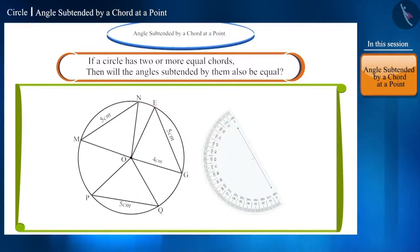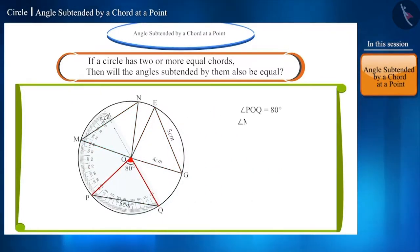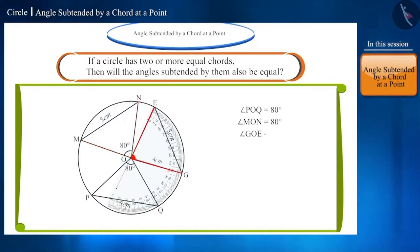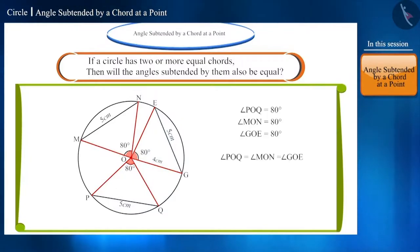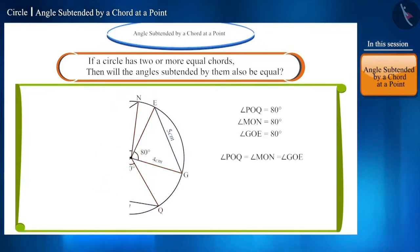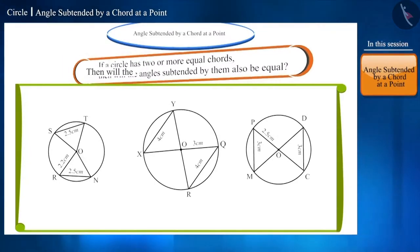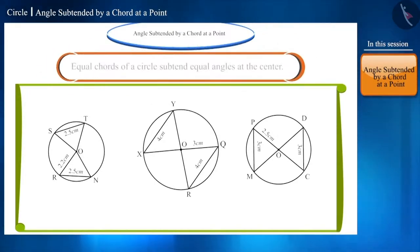Now, with the help of a protractor, find the measurement of the angles PQ, MN and GE subtended by the three chords at the center. You can see that all three angles are equal. Friends, you can repeat this activity by drawing more circles. You will find that equal chords of a circle subtend equal angles at the center.